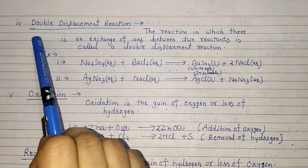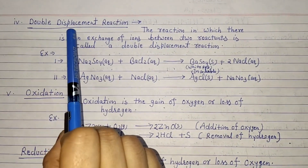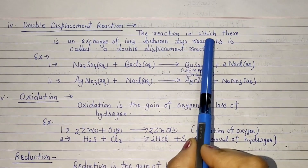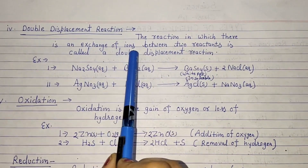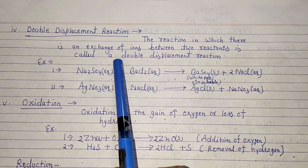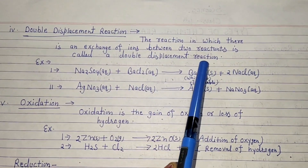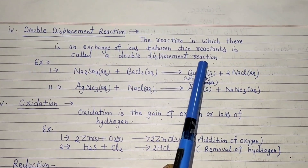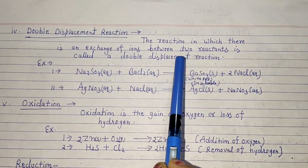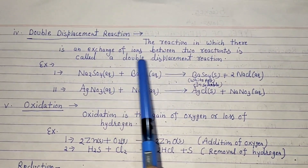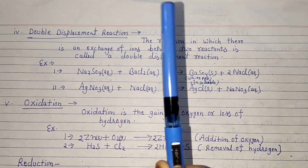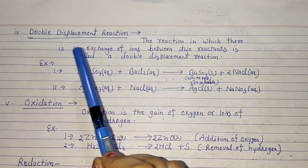Next type: double displacement reaction. In a double displacement reaction, there is an exchange of ions between two reactants. This exchange of ions between two reactants is called a double displacement reaction — the two reactants interchange their ions.